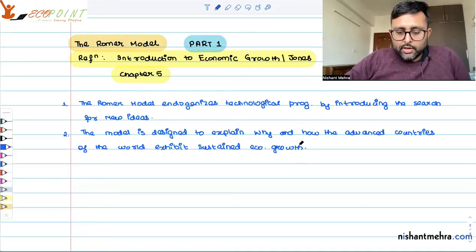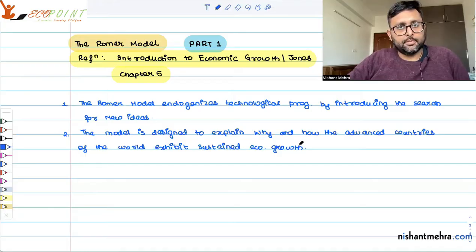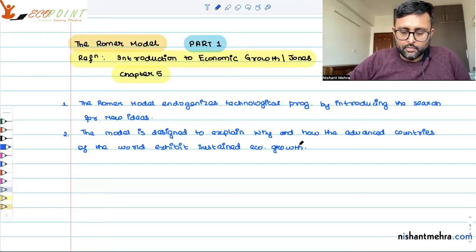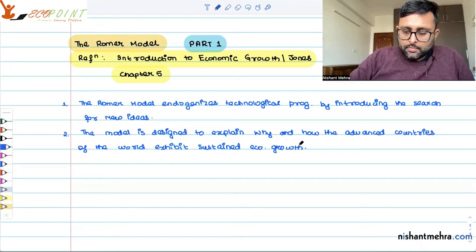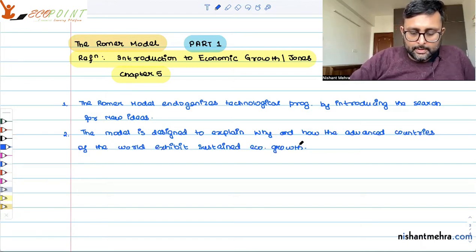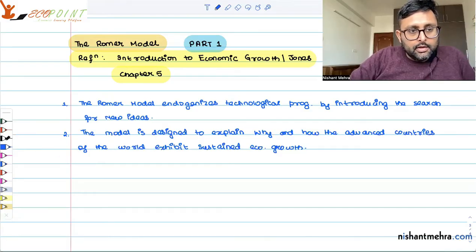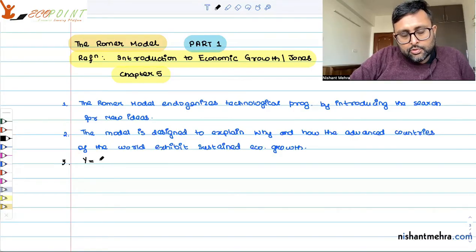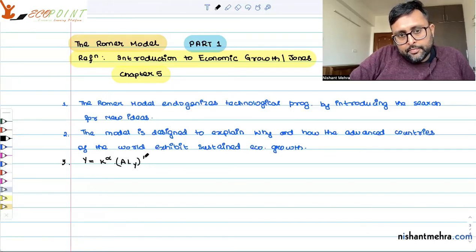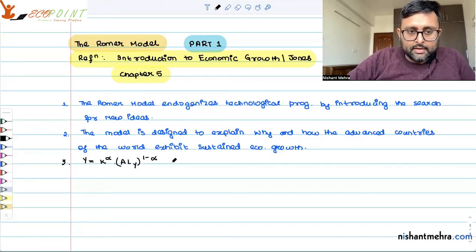So, Solow model had technological progress that was exogenously given. Here they have endogenized the technological progress. So we first assume a production function equation. Y is equal to K to the power alpha, A*Ly to the power 1-alpha.